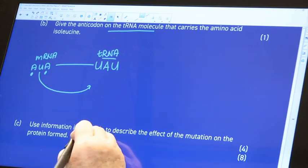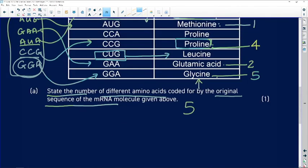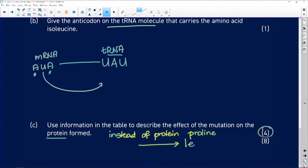The effect of the mutation on the protein, we're going to, and remember we're talking four marks here, instead of the protein having proline, we're going to see it have leucine. Now, what are the implications of this? This could change the structure of the protein. It could change the functioning of the protein.